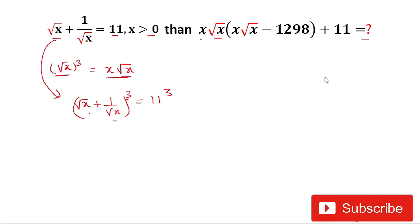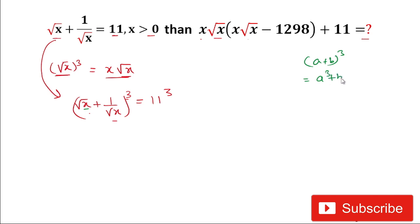We will apply the formula of (a + b)³. Since root(x) multiplied by 1/root(x) equals 1, the product a·b = 1. The formula expands as: a³ + b³ + 3ab(a + b).